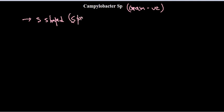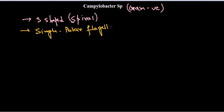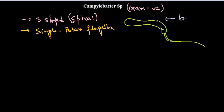They are spiral-shaped bacteria. This bacteria is usually found with a single polar flagella. If I draw the structure, Campylobacter looks something like this, and it has a single polar flagella. This is the bacteria and this is the flagella — that is the combined structure.